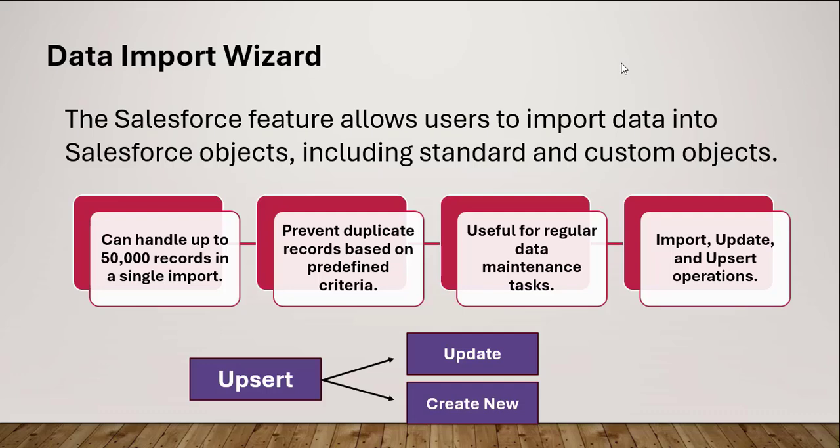The Data Import Wizard supports five standard objects: Account, Contact, Lead, Solution, and Campaign Member. Using the Data Import Wizard, we can handle up to 50,000 records in a single import. It also prevents duplicate records based on predefined criteria — according to the condition we define, it will prevent duplicate records. It is very useful for regular data maintenance tasks like importing leads and importing accounts.